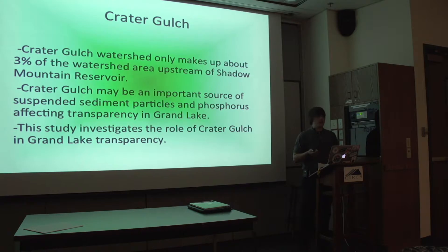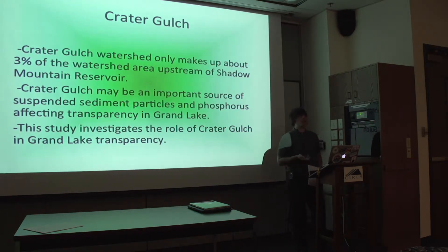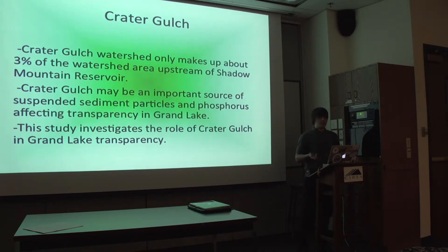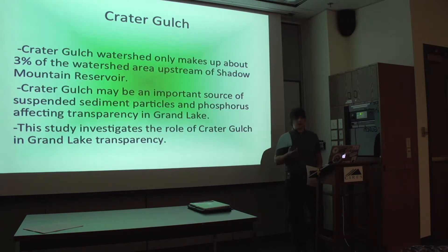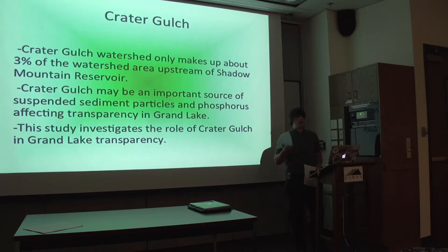Crater Gulch Watershed was the area of interest I was studying. It may be an important source of suspended sediment particles affecting transparency in Grand Lake. It only makes up about 3% of the watershed area above Shadow Mountain Reservoir, but despite its small area, it still displays high particle concentrations during periods of high discharge. It's also a source of volcanic ash deposits that are rich in phosphorus. In addition, it is at a higher elevation with less vegetation to retain the soil, so you have higher rates of soil erosion in this Crater Gulch Watershed.